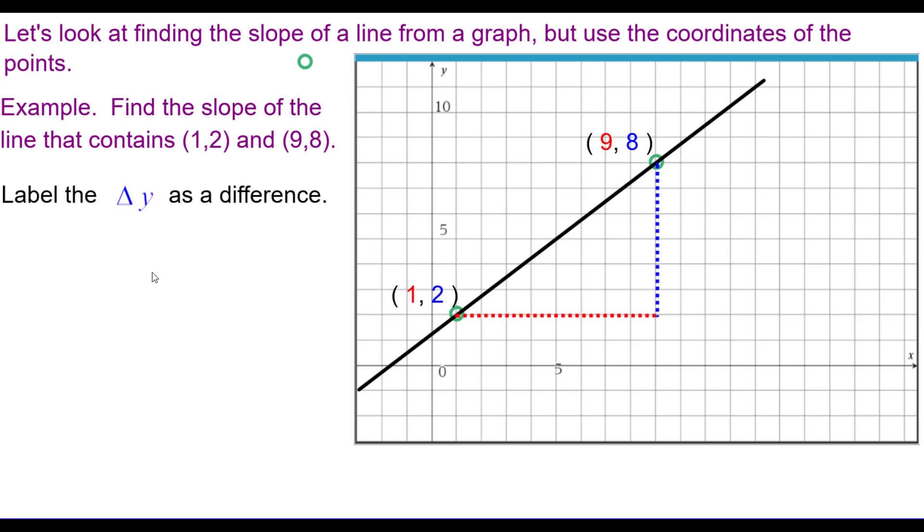Now, here's going to be a little bit of difference. I would like you to label the change in y as a difference of two numbers. So, in this case, the y coordinates going from here up to here is going to be 8 minus 2, which is 6. But I want you to write it as a difference of two numbers.